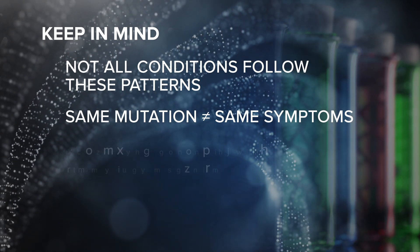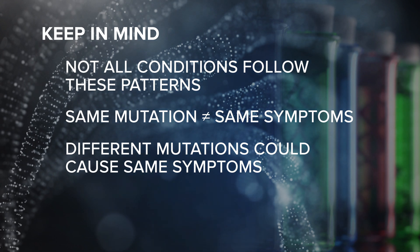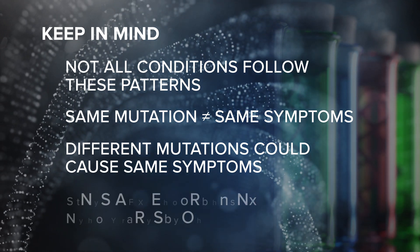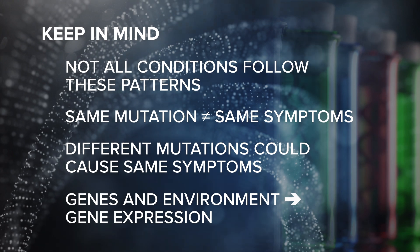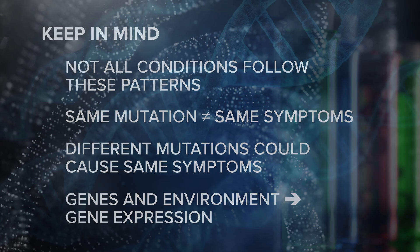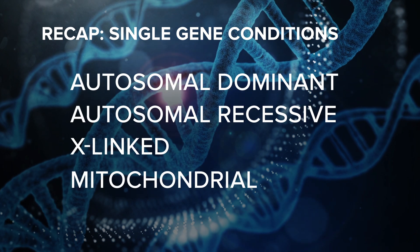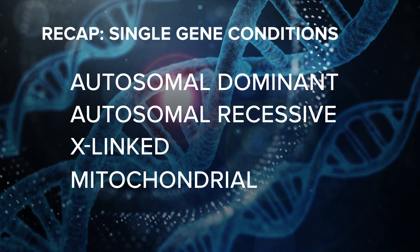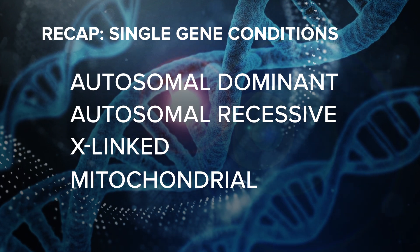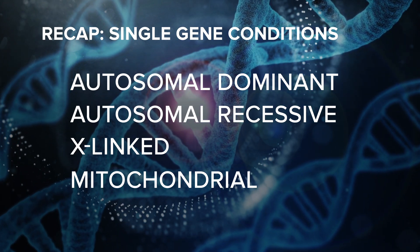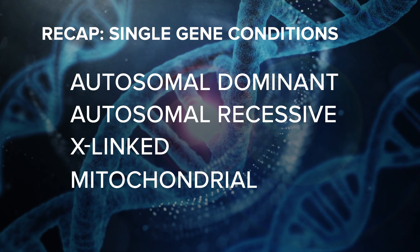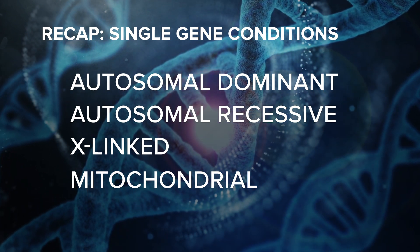Furthermore, sometimes individuals with different mutations can have the same or similar characteristics. This is in part because gene expression is influenced by both genes and the environment. To recap, there are four main patterns of inheritance for single gene conditions. Of course, many common medical problems do not have a single genetic cause. Rather, they come about as a result of the effects of multiple genes in combination with lifestyle and environmental factors.